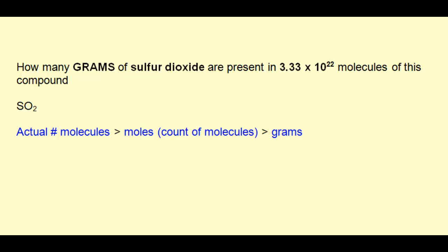The approach is to start with the actual number of molecules which we're given, then convert that number to moles using Avogadro's number, and finally convert that count of molecules in moles to grams using the molar mass of SO2.